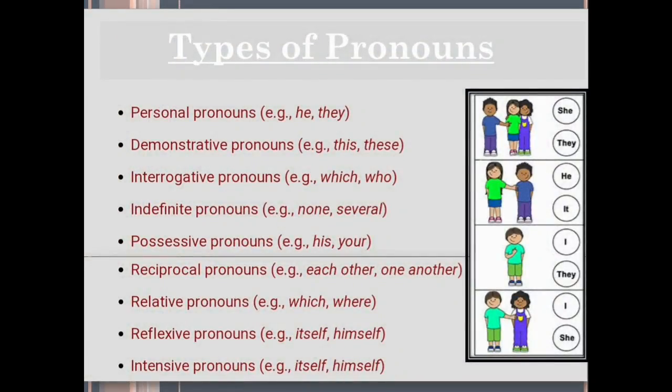See the use of different types of pronouns. Personal pronouns: he, they. Demonstrative pronouns: this, these. Interrogative pronouns: which, who. Indefinite pronouns: none, several. Possessive pronouns: his, your. Reciprocal pronouns: each other, one another. Relative pronouns: which, where. Reflexive pronouns: itself, himself. And intensive pronouns: itself and himself. Now let's see each type of pronoun in detail.